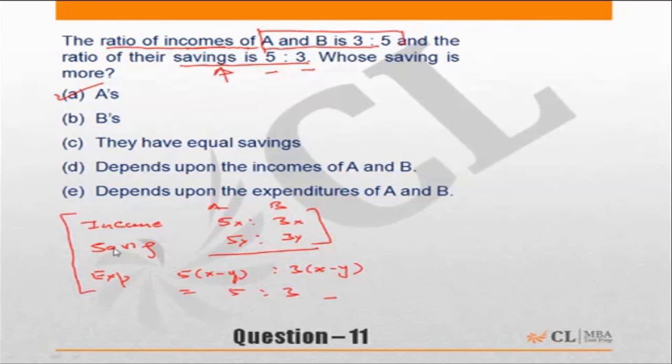Let me take another case now. Ratio of income is 5 is to 3, ratio of saving is 3 is to 5, and ratio of expenditure is—so ratio of expenditure, again let's do the same thing. 5x, 3y, 3x, and 5y. Okay, this is for A and this is for B.